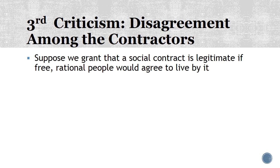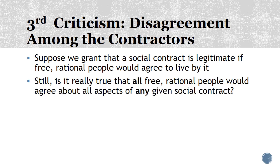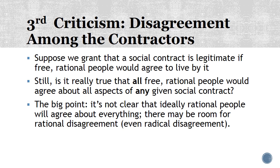Next, we can talk about disagreement among those who are parties to the social contract. Suppose we grant that a social contract is legitimate if free and rational people would agree to live by it. Still, is it really true that all free and rational people would agree about all aspects of any given social contract? The big point behind this objection is that it's really not clear that ideally rational people will agree about everything — there may be room for rational disagreement, even radical rational disagreement. A couple of different individuals might be quite rational about something and yet still very much disagree. Some people might think certain parts of the moral code would be necessary; others might not be so sure, and they may both have really excellent reasons. The trouble is it seems much harder for them to live in community with one another in the same contract, because there might be very important things people have very deep disagreements over that they can't necessarily live together through.